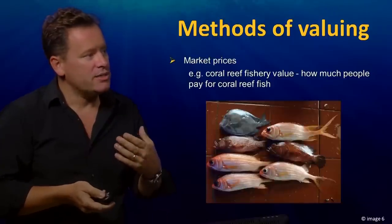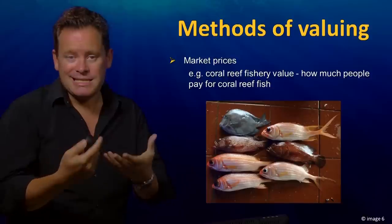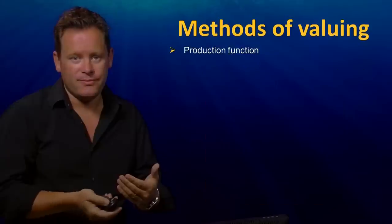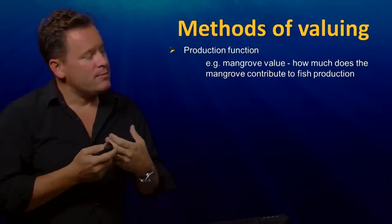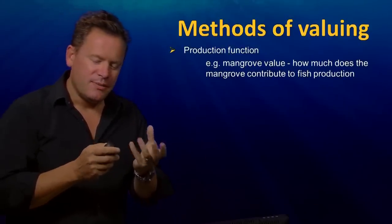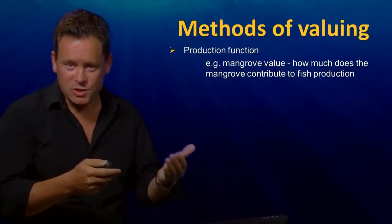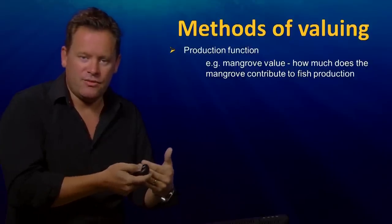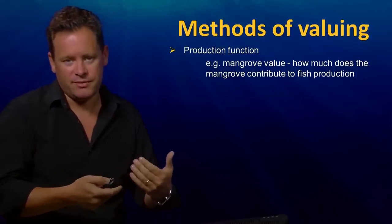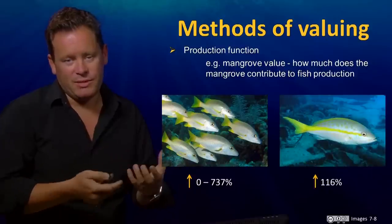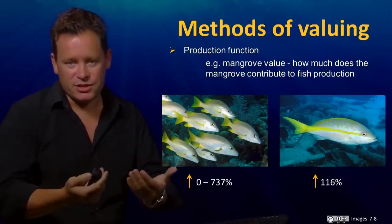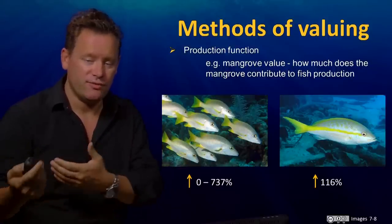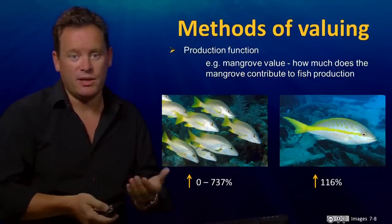Direct values are also straightforward — for example, you can easily value the contribution of fish to a local economy by looking at the price of those fish and how many are being caught. You can also use an ecological production function, which relates some measure of the state of a system directly to a benefit. For example, mangroves producing more fish through their nursery habitat functions — you can put a dollar value on that increase in fisheries yield.